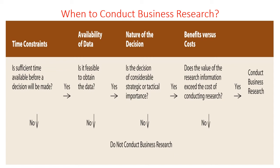If there is sufficient time, we go to the next step and check the availability of data: is it feasible to obtain the data? If we cannot get the data for our research, we stop. If we can get the data, we go to the next step and check the nature of the decision: is the decision of considerable strategic or tactical importance? If the decision does not have strategic or tactical importance, we stop doing the research.